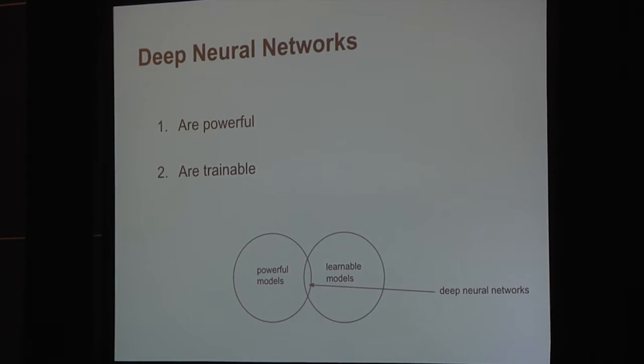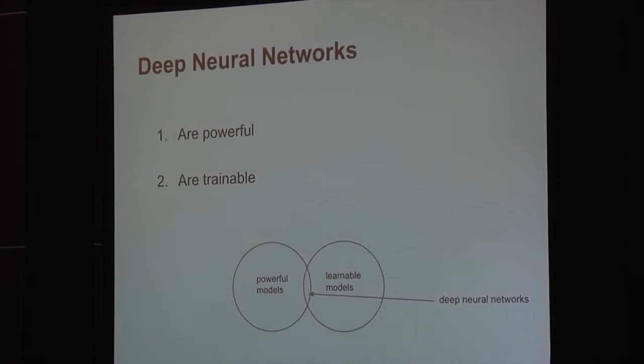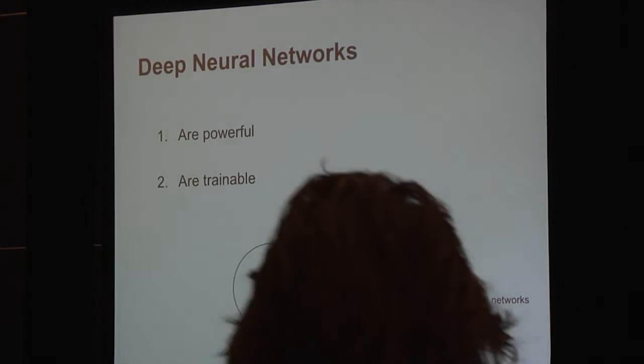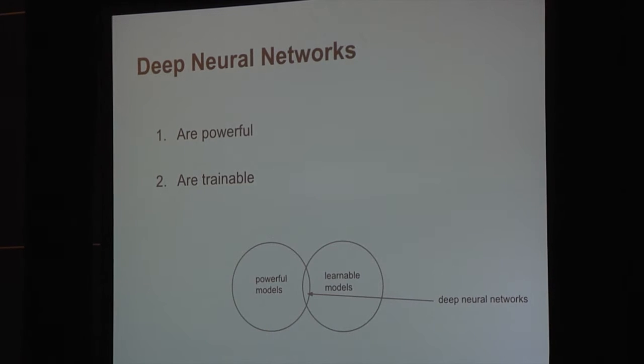The foundation of this work is the deep neural network. Deep neural networks have two properties that make them very desirable and attractive. The first property is that they are powerful, which means that they can perform an astonishingly wide range of computations. There is a very good chance that they can compute the function that we care about. The second property is that they are trainable.